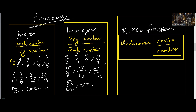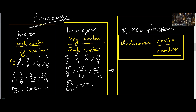We have looked at proper fractions as a small number over a big number, and you understand that. So we can move on and round up. Three over five, seven over nine, one over nine, two over five, seven over eleven — smaller number over big number, those are proper fractions.